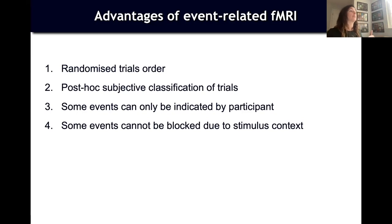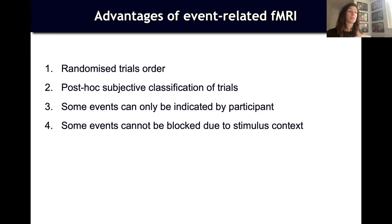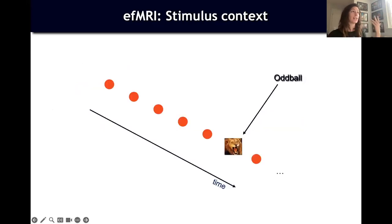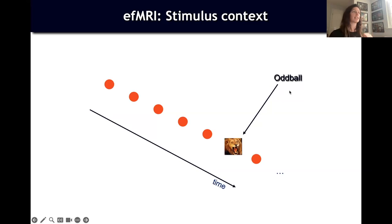Sometimes events cannot be blocked due to stimulus context. For instance, in the 'oddball task,' you present the same type of stimulus repeatedly and then suddenly insert a different one — an oddball. You're interested in what happens when participants see something different. By the whole definition of novelty, you cannot block novel stimuli together.